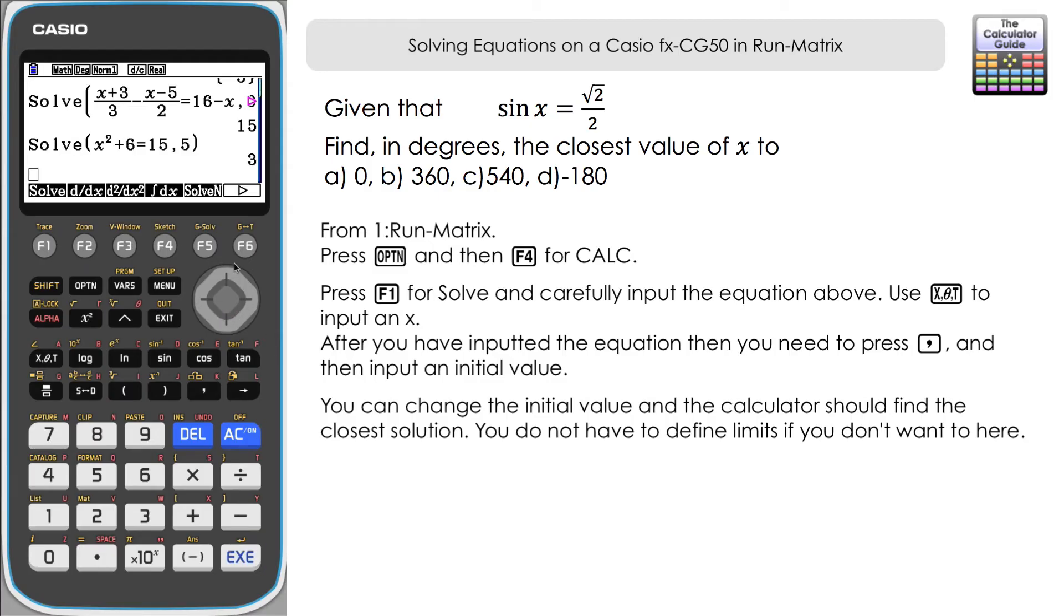So we've got degrees at the top here. Solve again. Let's input our function sin(x) = √2/2 comma. Okay so we want the solution closest to zero, so zero close bracket press execute and here we have the solution that is closest to zero which is 45, so 45 degrees. That is fairly straightforward. Let's go back using the up key. Alter that initial value to 360. Press execute and we can see that we've got our closest value there of 405 degrees.